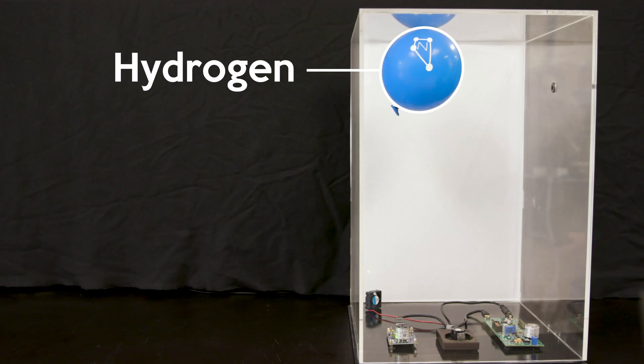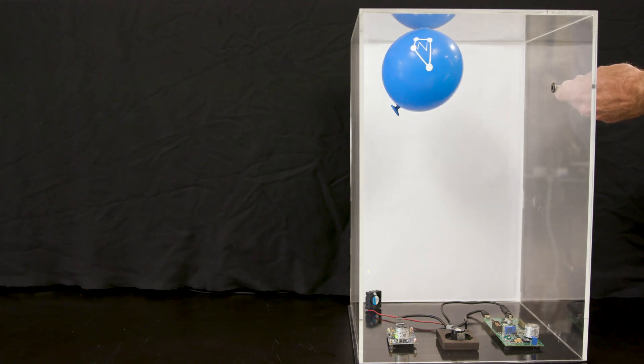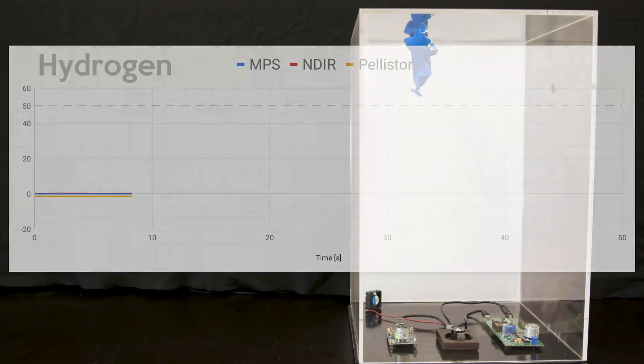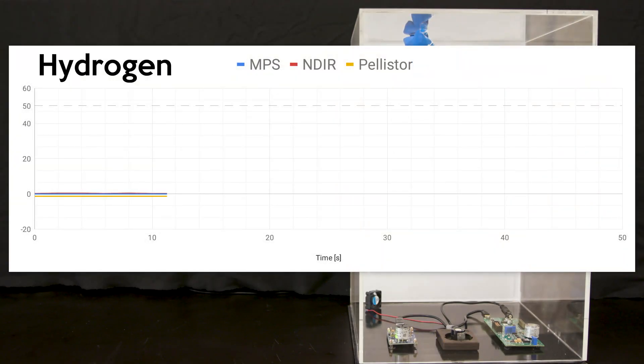Lastly, we have hydrogen. Again, the balloon is filled to the equivalent of 50% LEL for this volume, and I'll pop it. I'll let it circulate a little bit. So the NPS accurately detects hydrogen and reports it at 50% LEL. It also correctly identifies it as hydrogen. Meanwhile,